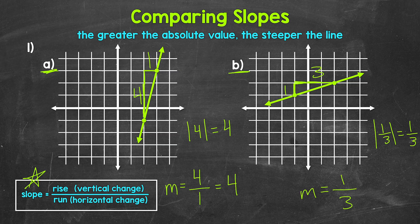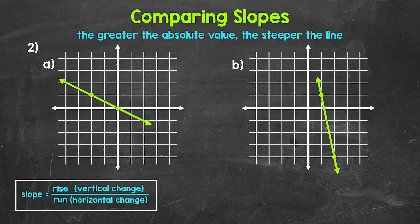Let's move on to number two. We have two lines again, and both of these have a negative slope. It looks like line B is steeper than line A, but let's find these slopes and see what we are working with.